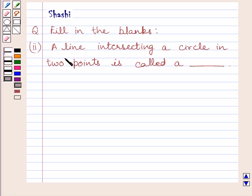Second part is, a line intersecting a circle in two points is called a dash.